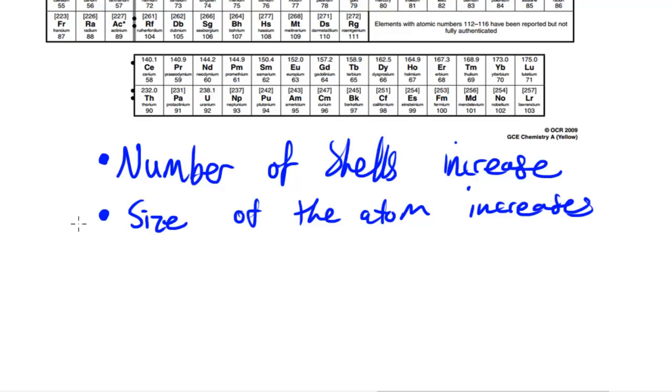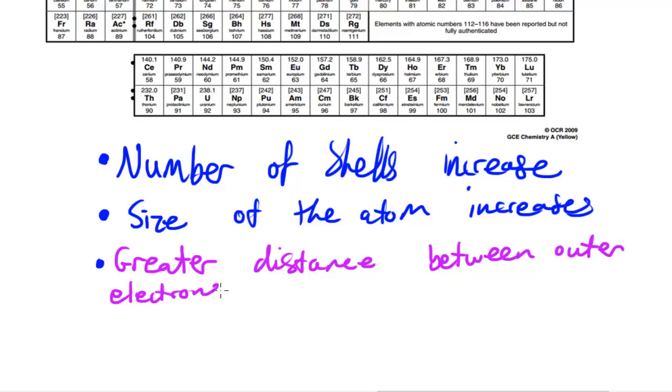And because the size of the atom has increased, there's a greater distance between the electrons, the outer electrons, and the positive nucleus. Greater distance between outer electrons and positive nucleus.